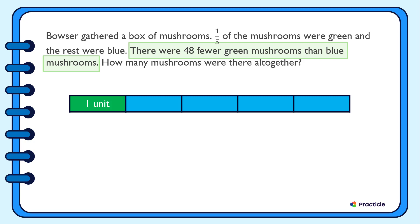4 minus 1 equals 3. And what can we tell from that? Can you tell that this difference of three units represent 48 mushrooms? And this is a really good clue to help us solve this question.